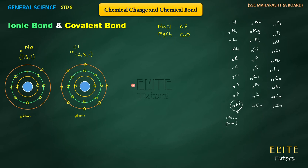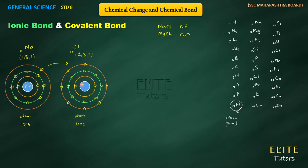Chlorine has 7 electrons in its outermost orbit, so it tries to accept one electron to complete its shell. When sodium donates and chlorine accepts, ions are formed with a charge. The sodium nucleus has 11 protons (11+ charge) and originally had 11 electrons (11- charge), making it neutral. But after donating 1 electron, only 10 electrons remain — so 10 minus balances 10 plus, leaving 1 extra positive charge.